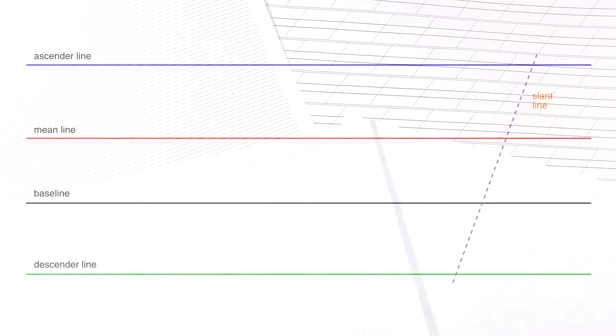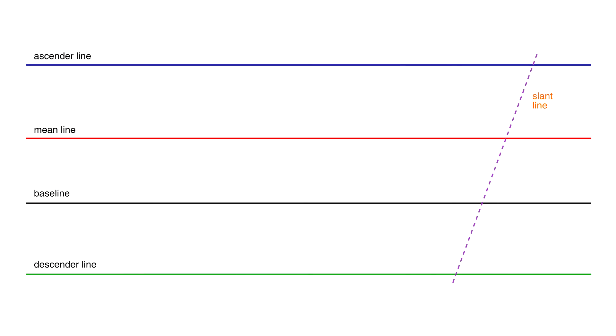First, the basics. There are five lines we're interested in: the baseline, the mean line, the ascender line, the descender line, and the slant line.